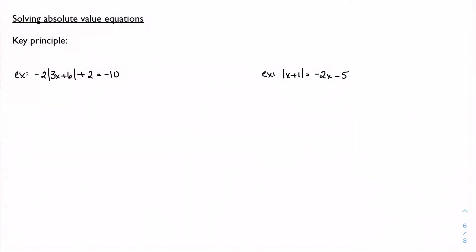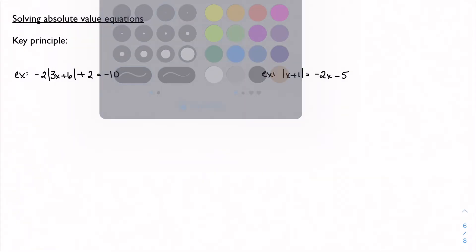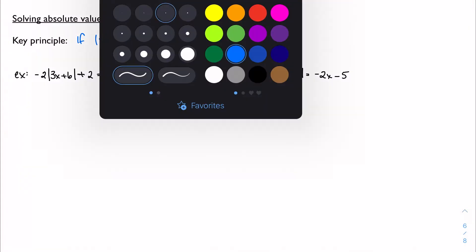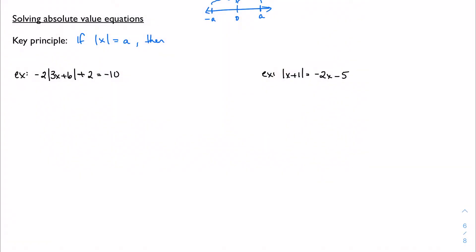One more piece with absolute value equations — actually solving the equations. The key principle here is: if the absolute value of some number x equals some number a, then, thinking about distance, x could be a units in the positive direction or a units in the negative direction. That gives two different cases. So if |x| = a, then x equals a or x equals negative a, and we have to solve both.